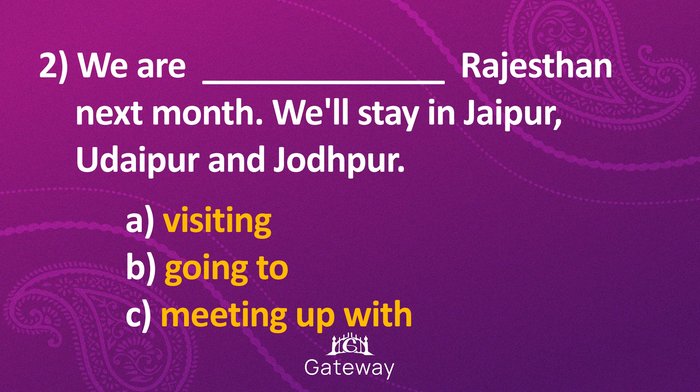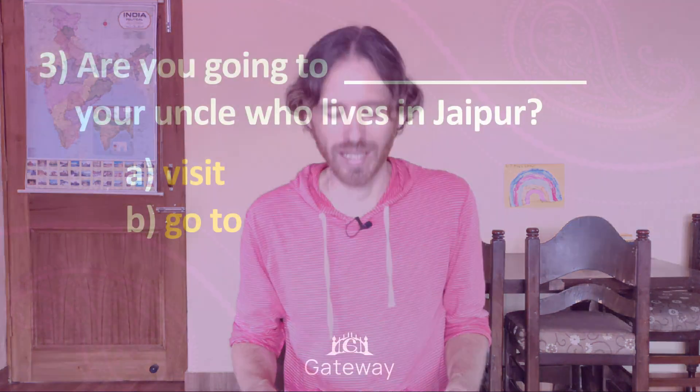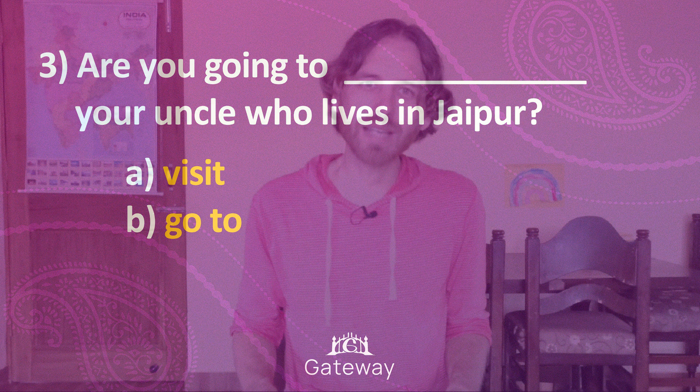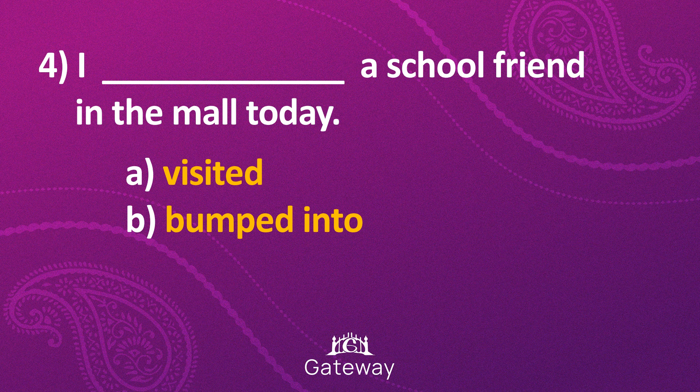Both 'visiting' and 'going to' are correct for number two. Good work! Number three: 'Are you going to — (a) visit or (b) go to — your uncle who lives in Jaipur?' If you said 'visit,' then you made the right choice. Number four: 'I — (a) visited or (b) bumped into — a school friend in the mall today.' That's right: 'I bumped into a school friend in the mall today.' This was an unplanned meeting.